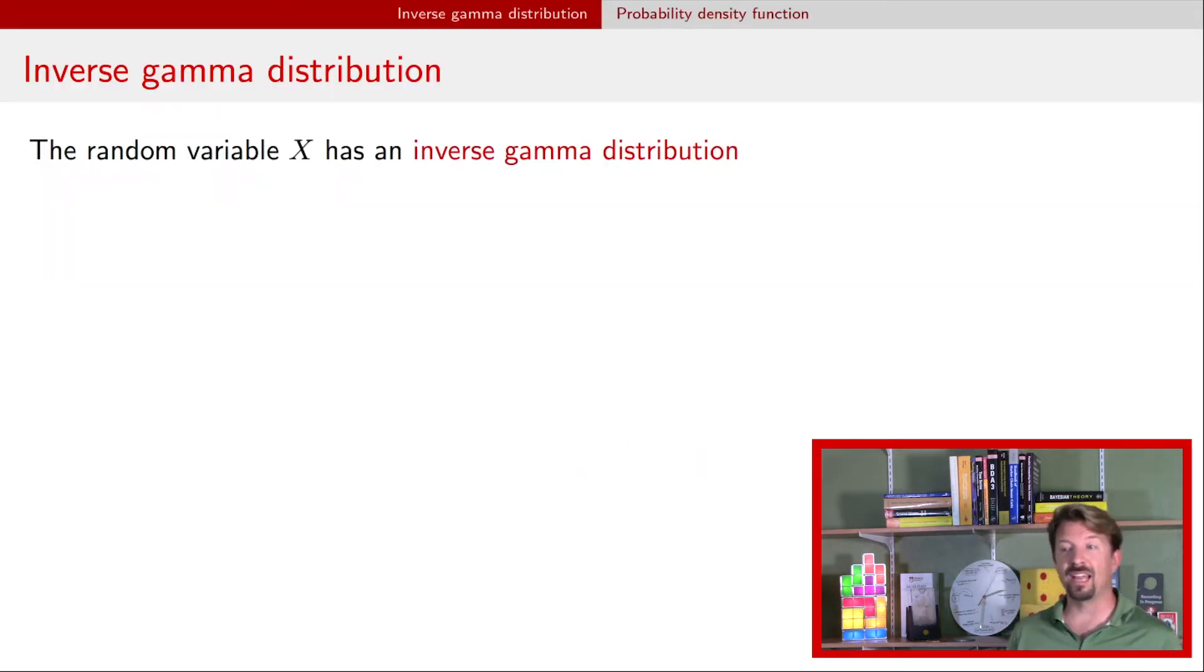The inverse gamma distribution has two parameters. It has a shape parameter that I'm going to call alpha, and it has a scale parameter that I'm going to call beta.